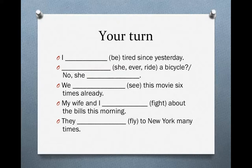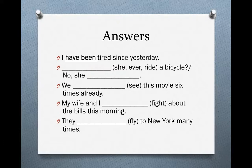Let's look at the answers. For the first one: 'I have been tired since yesterday.' We use the present perfect. Why? Because of 'since.' We can assume this person is still tired — the event is not finished yet. It began in the past but is still happening now. Therefore, present perfect. And we use 'since' and not 'for' because we have a specific time: yesterday.